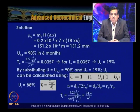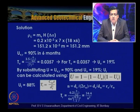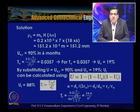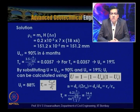Using T_v = (π/4)(U/100)², we find U_v is only 19%. Substituting U_VR = 90% and U_V = 19% into Carrillo's (1942) equation, we solve for U_R and obtain 88%. This means the drain arrangement must achieve approximately 88% radial consolidation within 6 months.